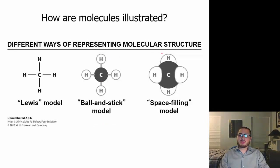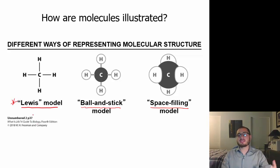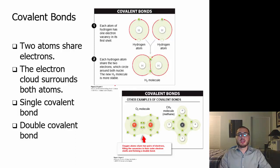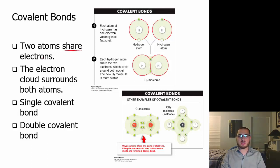There are different ways to represent molecular structure. Textbooks use the Lewis model, which keeps it simple, the ball-and-stick model, which is visually clear, and the space-filling model — but all of them are depicting the same thing. There are different types of bonds in chemistry, and the ones we focus on most include covalent bonds, where two atoms share electrons.